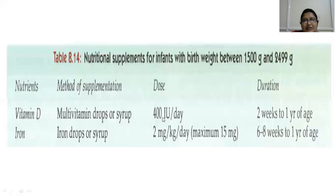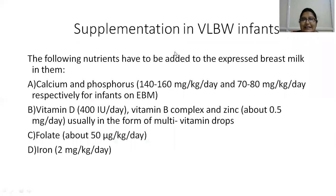Vitamin D should be given 400 international units per day until one year, starting from two weeks. Iron: 2 mg per kg per day, started from six to eight weeks to one year of age. For very low birth weight infants, since accretion of vitamins and trace elements happens only in the last trimester, when delivered earlier they are lacking in all these. The deficit includes calcium, phosphorus, vitamin D, B-complex, zinc, folate, and iron — all should be supplemented.